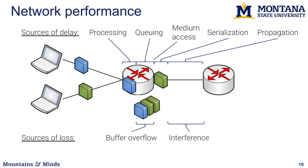Packets can be lost for two reasons. First, buffer overflow: too many packets arrive such that the outgoing buffer fills up, and new incoming packets are dropped — they must be retransmitted. Second, interference: in wireless networks multiple transmitters send at the same time, so the receiver gets garbage. The analogy is too many people speaking at once and you can't understand any one of them.